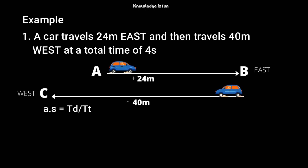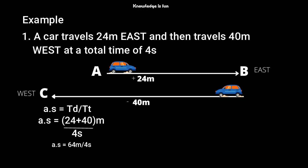The total distance is the full journey from A to C. The distance from A to B is 24 meters, plus the distance from B to C which is 40 meters, giving a total distance of 64 meters. Dividing 64 meters by 4 seconds gives an average speed of 16 meters per second.